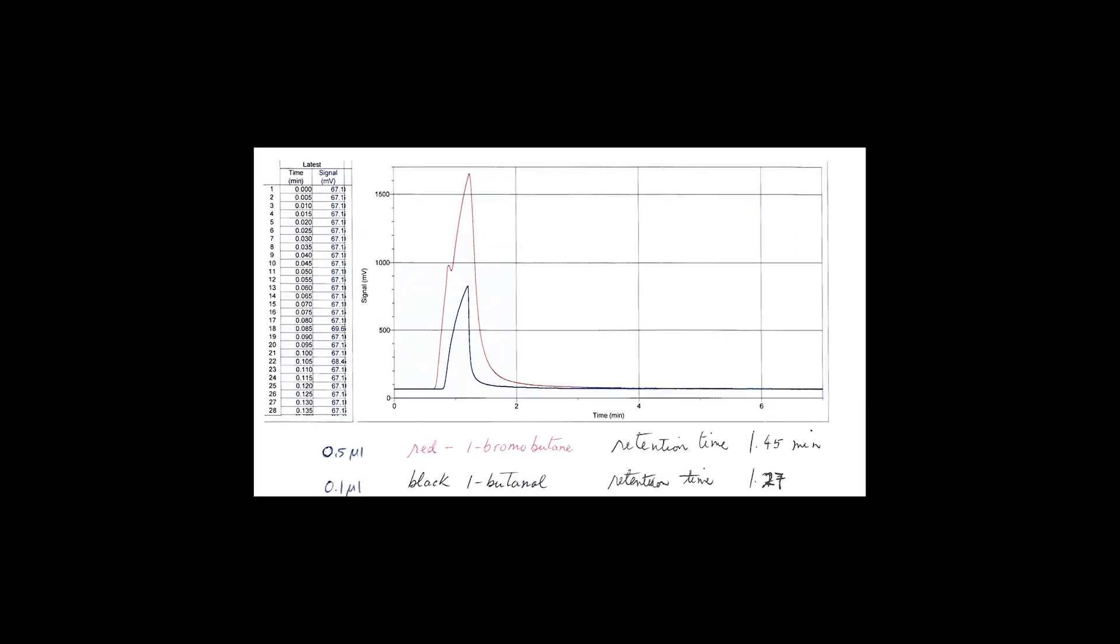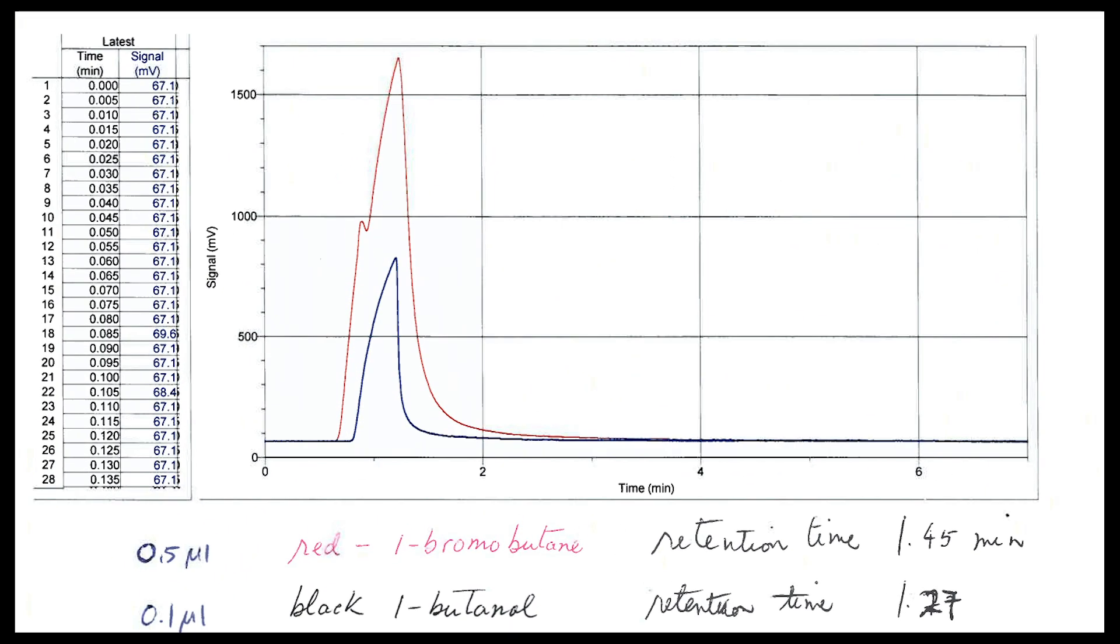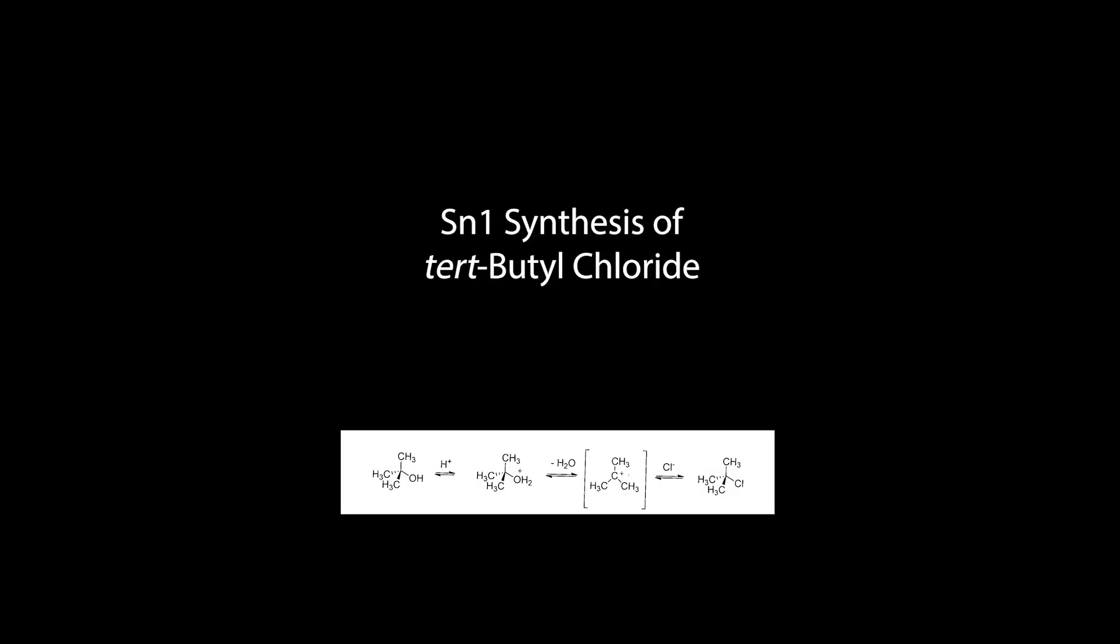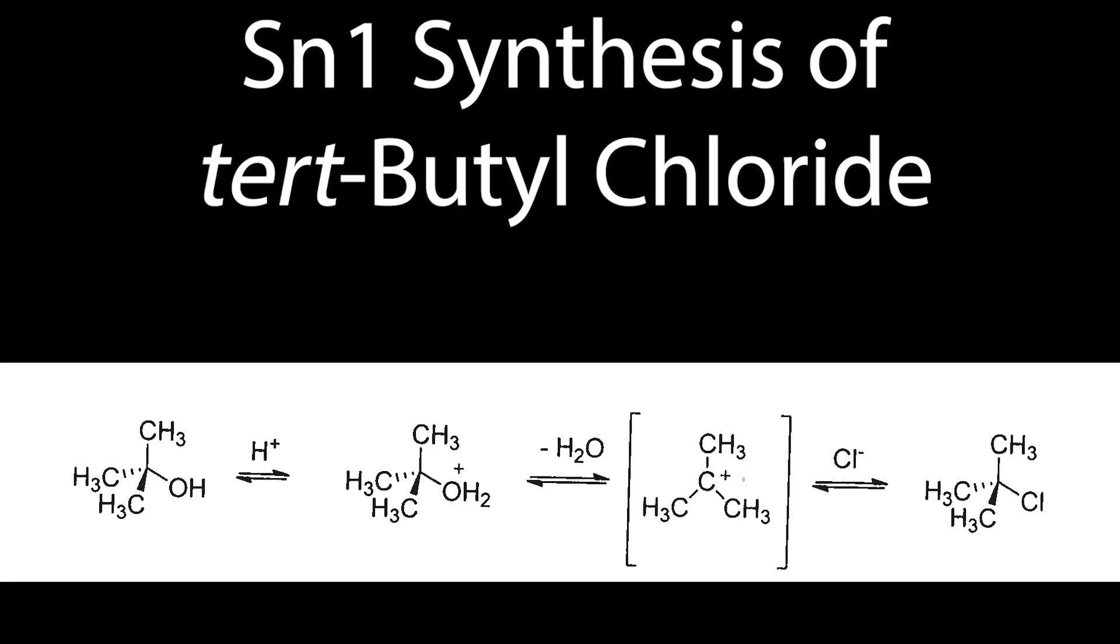Run your sample through a gas chromatograph machine, also known as a GC, and compare it to the known standards. SN2, synthesis of t-butyl chloride.